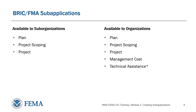Let's look at the different types of sub-applications available in the BRIC and FMA programs. You will notice that the types available to sub-organizations are a bit different than the types available to organizations. We discussed organizations and sub-organizations in Module 2, but let's review their relationships again. Sub-organizations can submit hazard mitigation planning, project scoping, and project sub-applications to their state, tribal, or territorial emergency management organizations — that is, the applicant organization.